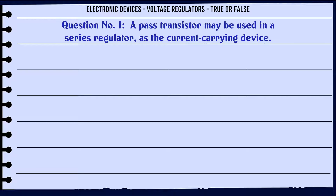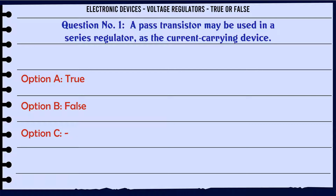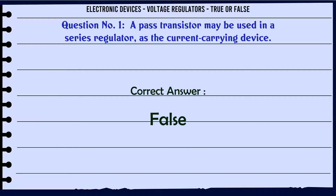A pass transistor may be used in a series regulator as the current-carrying device. A. True. B. False. The correct answer is: False.